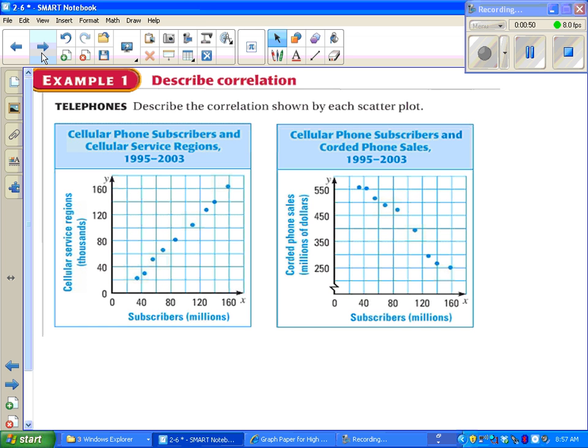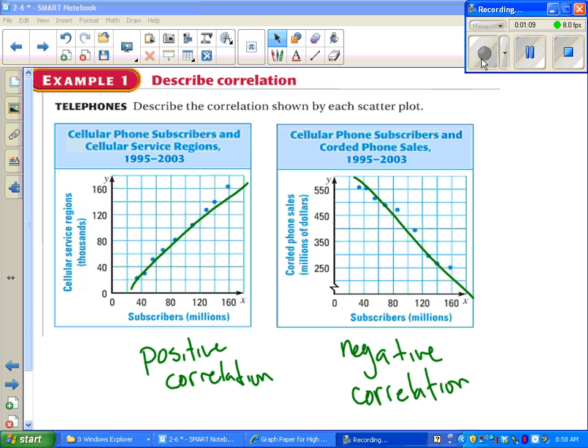Example 1 says describe the correlation shown by each scatter plot. You can read what it says there. It doesn't access to interpret what's going on. Just looking at the picture instantly, I can see that I've got a positive correlation on the first one. And, although it's not as clear, I can see the negative correlation on the second one. That's it for that.